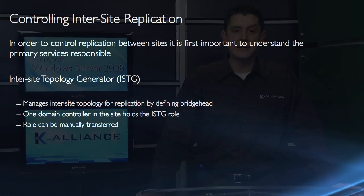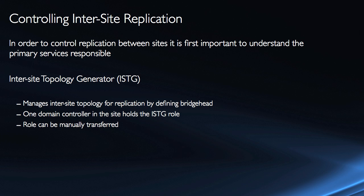Keep in mind that both of these services — while it's important to understand what they're doing — there is actually very little that you will have to do on a daily basis to configure these. The whole idea is that they are automatic. KCC runs on every domain controller and automatically creates connection objects within the site and between sites. ISTG is responsible for the bridgehead servers. Both are automatic services and in most cases do not require a lot of configuration.